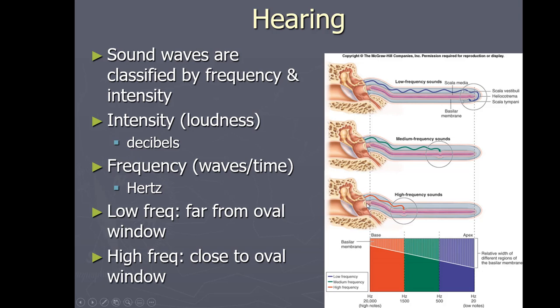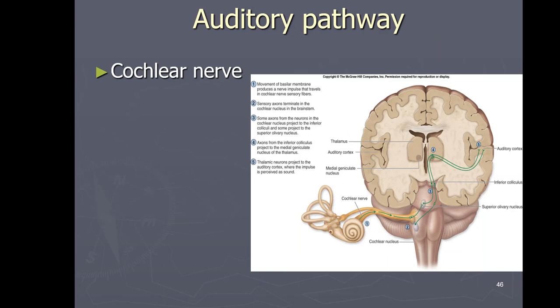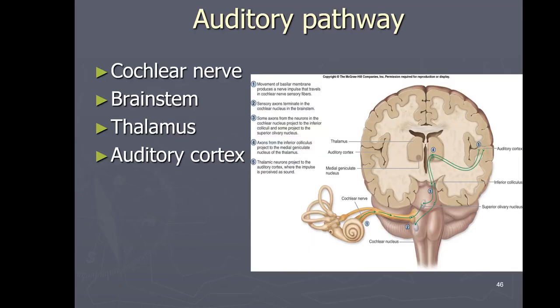We can only hear sounds within a certain frequency range. Some animals like dogs and cats can hear at a higher frequency because their inner ear is slightly different. The auditory pathway uses the cochlear branch of the vestibulocochlear nerve — cranial nerve eight.